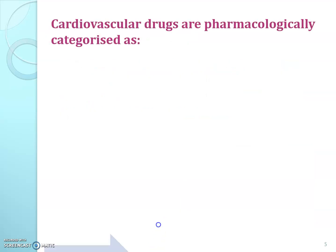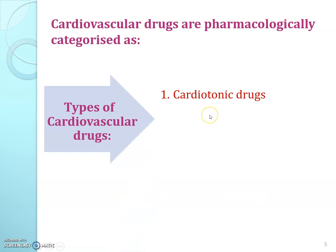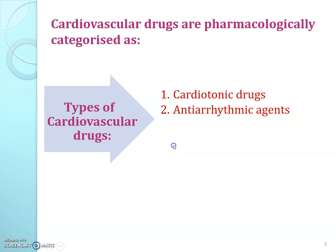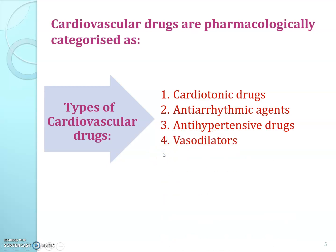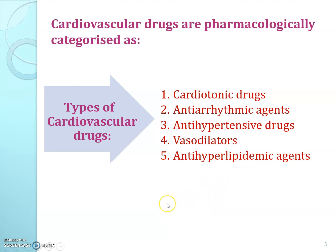Now see the types of cardiovascular drugs. First, cardiotonic drugs — these increase the force of contraction and have a tonic effect on the heart. Second, anti-arrhythmic agents, used to treat cardiac arrhythmia. Third, anti-hypertensive agents, used to treat hypertension. Fourth, vasodilators — drugs causing dilation of blood vessels. Fifth, anti-hyperlipidemic agents, also known as lipid-lowering agents, which are used to lower plasma lipid levels.